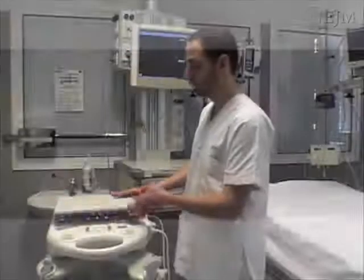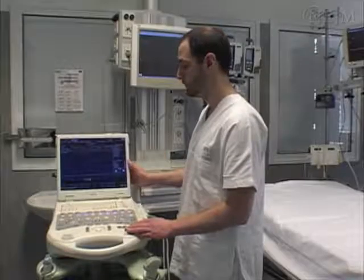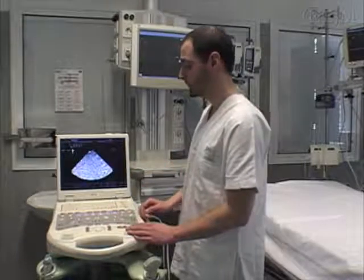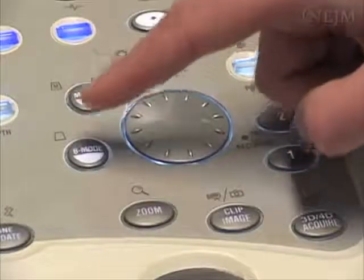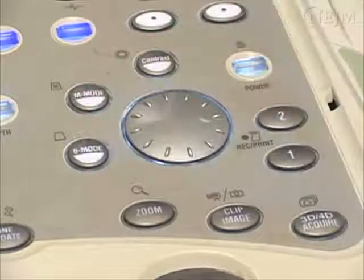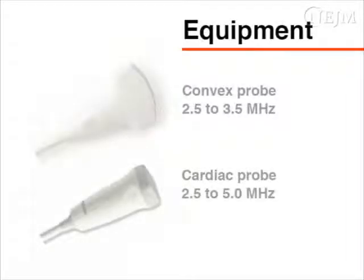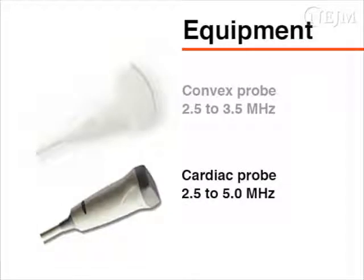Gather the necessary equipment. You will need an ultrasound unit with basic software. Use the brightness mode, generally known as B mode, to locate the structures of the chest and the pleural effusion. The unit should also be equipped with the appropriate probes: a convex probe with a frequency of 2.5 to 3.5 MHz, or a cardiac probe with a frequency of 2.5 to 5 MHz.